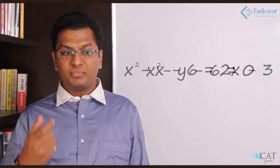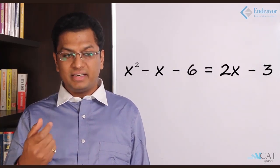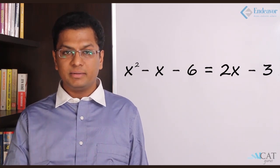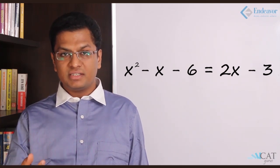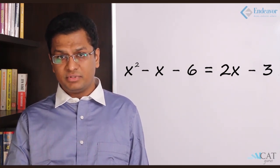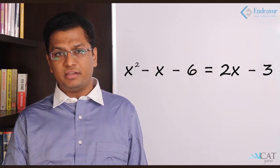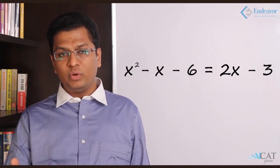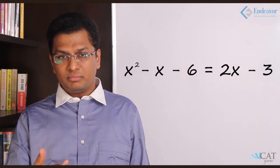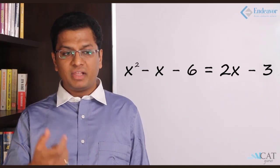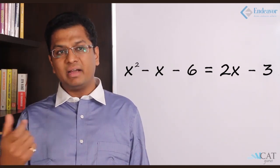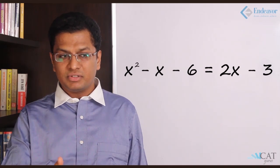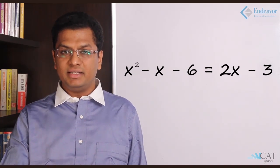Let us look at the last example: x² - 6 - x = 2x - 3. Now this has more than three terms, but still it is a quadratic equation. Why? Because -x and 2x are the same terms, so they can be merged into one, and -6 and -3 can also be merged into one. So the total number of minimum terms will be three in this case.